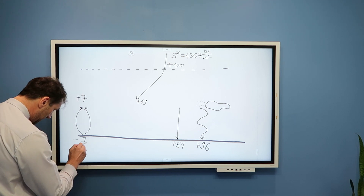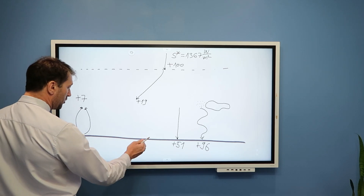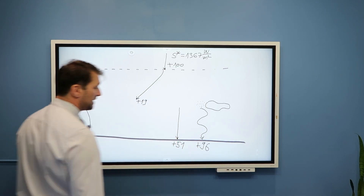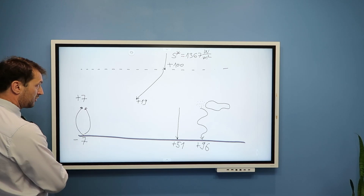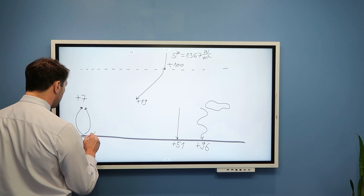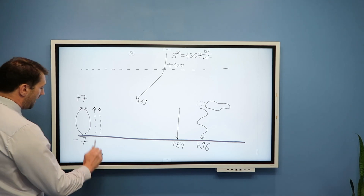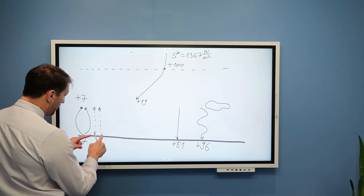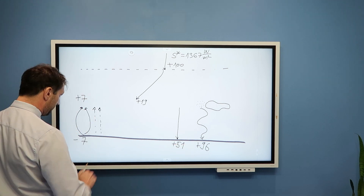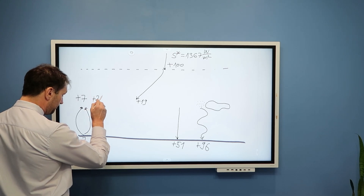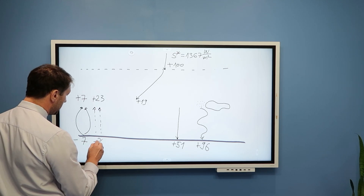Which means the Earth's surface will lose these 7 units. Remember, the left side is the amount of energy the Earth's surface loses; the right side is what the Earth's surface receives. So this is convection and conduction. Then we also have evaporation of liquid water from the surface. Water evaporated at the surface using this energy is condensed in the atmosphere — plus 23 units — which means the Earth's surface loses these 23 units.